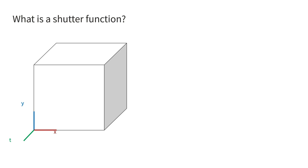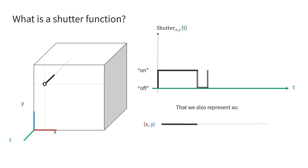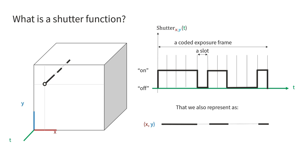In our work, we model binary shutter functions that prescribe at any point in time whether the pixel is turned on and captures light, or whether it is turned off. In practice, we will consider shutter functions defined on discrete slots. Many such slots constitute a coded exposure frame. For a given pixel, we will schematically represent the shutter function with a bold line when the shutter is on, and a thin line when it is off.